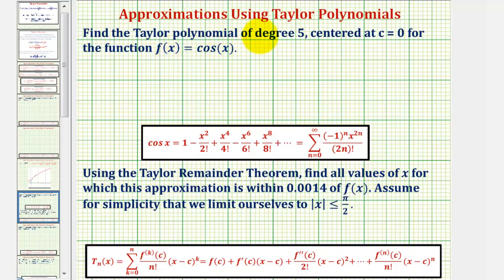Notice how the Taylor polynomial is centered at c equals zero, so we could also call this the Maclaurin polynomial. And if we know the power series for cosine x centered at zero, we can very easily find our Taylor polynomial. Notice how there is no degree five term, and therefore the degree five Taylor polynomial would only consist of the first three terms of our power series.